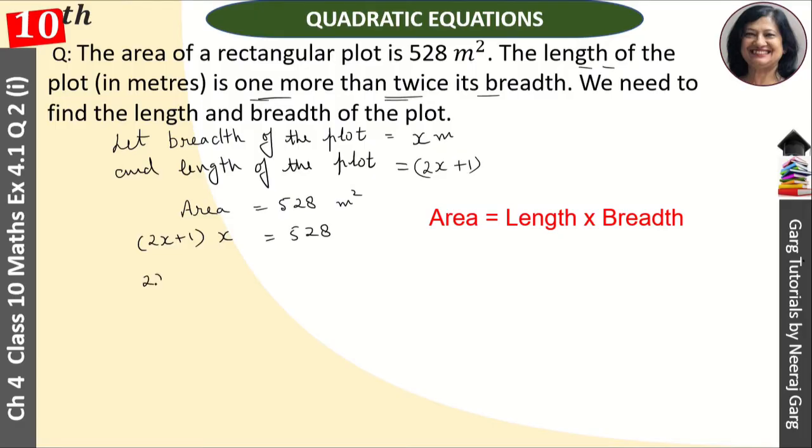Opening the brackets: 2x² plus x equals 528, which gives us 2x² plus x minus 528 equals 0.